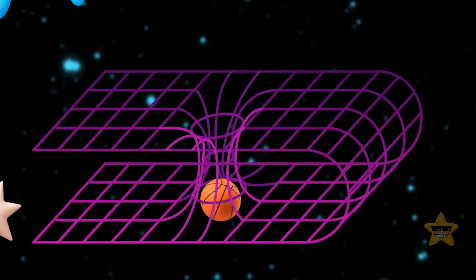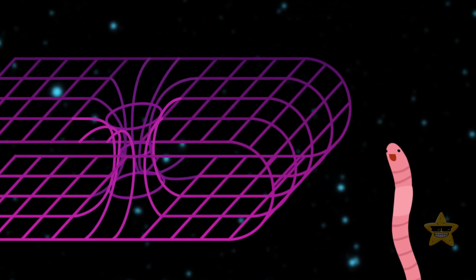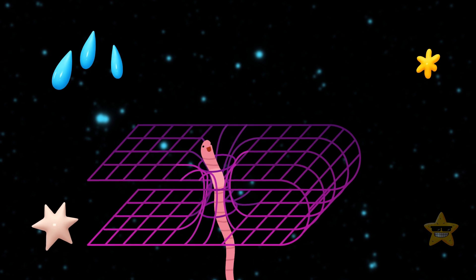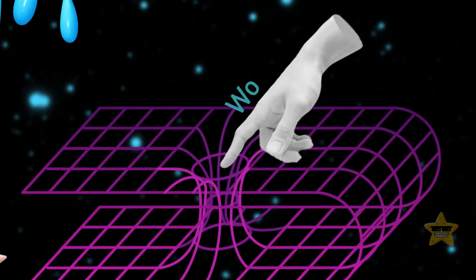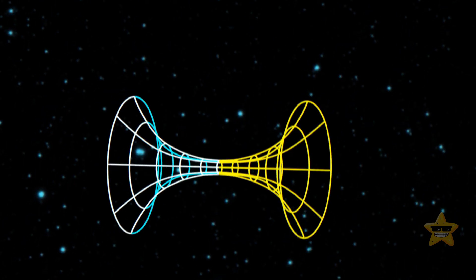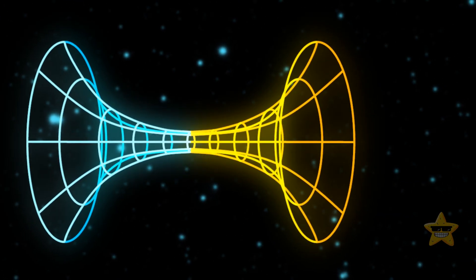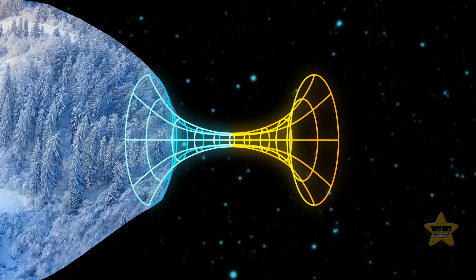But if an object is heavy enough, this flexible fabric can stretch so much that two points might potentially meet. The tunnel between those two points would be a wormhole. They're basically bridges that connect two places in the fabric of space and time that have no chance of ever meeting in normal circumstances.